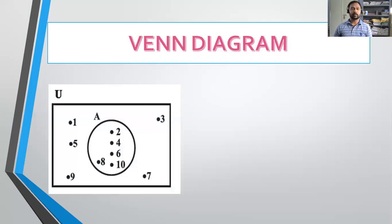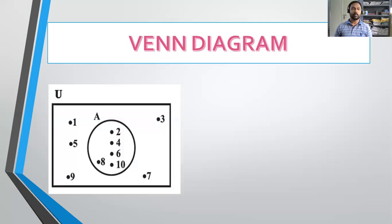Here is one more example. The universal set is all natural numbers from one to 10, and A represents all the even integers. You can see the universal set has one, three, five, seven, nine left outside, and inside A the even integers are represented. So here very clearly A is a subset of the bigger set, or U is the universal set — the superset of A.